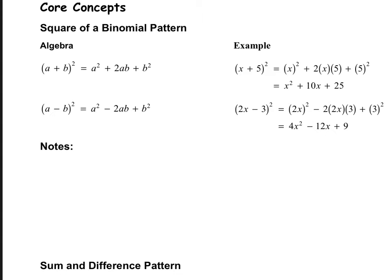This method really appeals to people who like to find shortcuts for special types. So here we have a square of a binomial pattern. If you have either (a + b) quantity squared or (a - b) quantity squared, then there is a shortcut for finding the answer. You take the first term and square it, then the first and second multiplied together and multiplied by 2 goes in the middle, and then the last term squared. The same thing is true if there's a minus sign instead — the only difference is that your middle term will be negative.